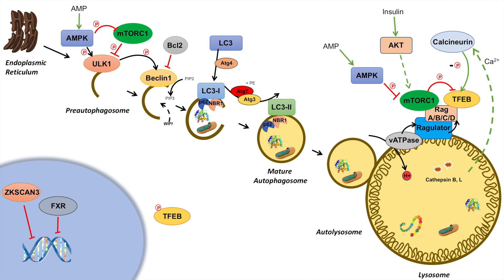During fasting, when we look at the nucleus, ZKSCAN3 and FXR are actually expelled from the nucleus. ZKSCAN3 is a negative regulator of TFEB — when it's in the nucleus it prohibits TFEB from binding to its targets. Once ZKSCAN3 is kicked out of the nucleus, TFEB no longer has a negative regulator within the nucleus.